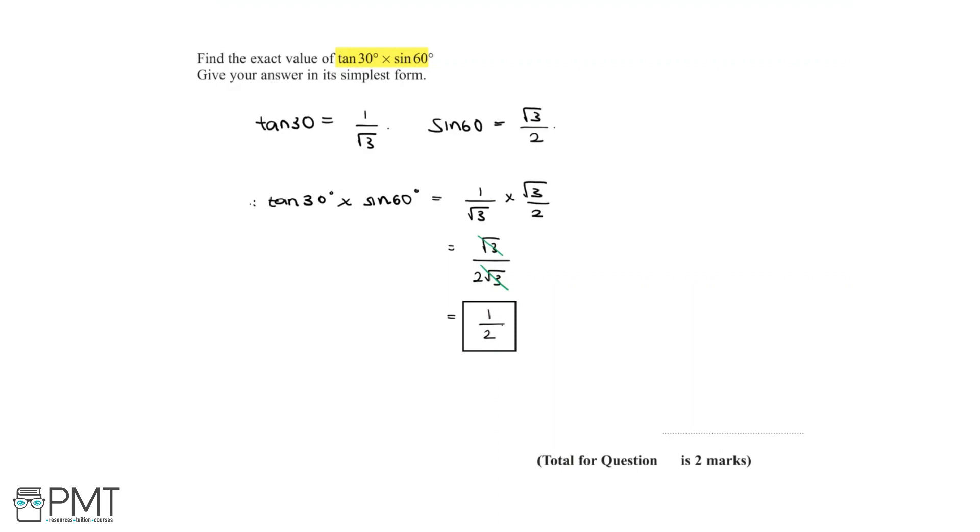And so we have now found that the exact value of tan 30 multiplied by sin 60 is equal to 1 over 2, which we can write down in our answer box below.